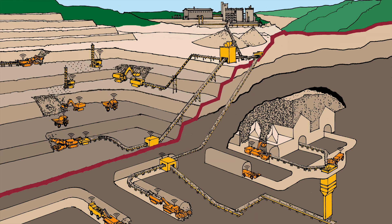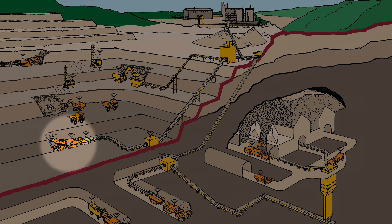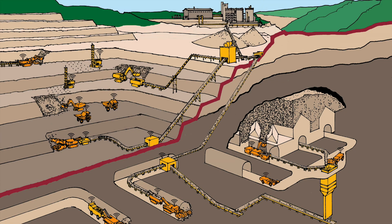Selective processing begins in the mine itself with the use of sensors and continuous miners to separate ore and waste earlier.